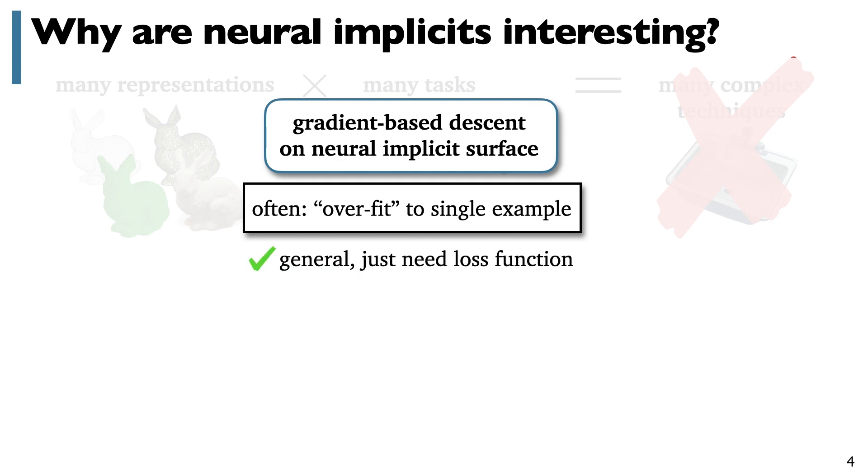So not only do these neural implicit representations often easy optimization of many different objectives and many tasks by just minimizing some loss function, but they also adaptively represent varying complexity without explicit choices of discretization, they're easy to integrate with the machine learning toolbox when we do want to do so.